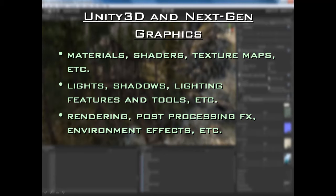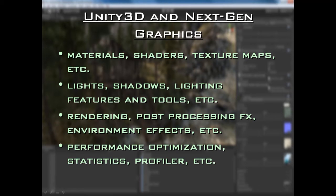We are also going to be looking at rendering, post-processing effects and environment effects. Then finally we are going to talk about performance optimization. We are going to use tools like the statistics window and the profiler to optimize our game. If your game looks fantastic but runs in slow motion at maybe 10 frames per second, no player is going to want to play it. So we are going to learn optimization techniques specific to the Unity 3 engine and use different tools to find a nice balance between our work looking really high quality but also running rock steady at a very fast, high frame rate.